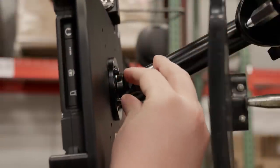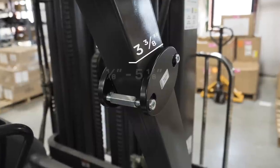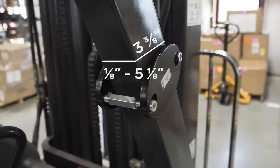Forklift mounts include hardware for most situations and can be mounted on a bar up to 3 3/8 inches wide and between 1/8 inch and 5 1/8 inches thick.